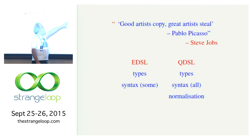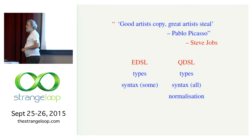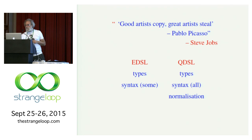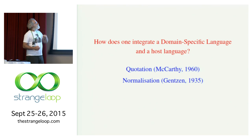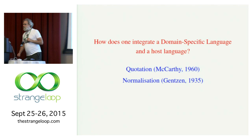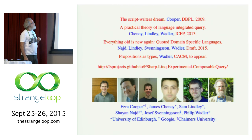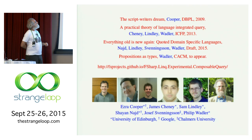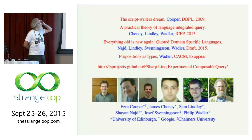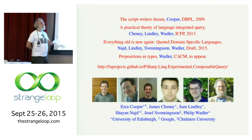Everything old is new again. How do you go about integrating a domain specific language with a host language? Just use the old ideas of quotation and normalization. I didn't do this work all on my own — there are other people who contributed. For those of you who saw my talk on propositions as types yesterday, propositions as types is written out as a paper you can download from my website, and it will appear in CACM in December. The library I showed you for F# is publicly available and is part of the F# ecosystem now. Warm fuzzy feelings to all of you. Thank you very much.